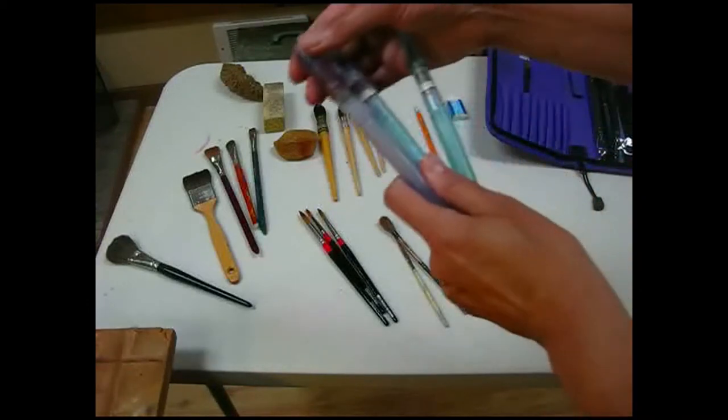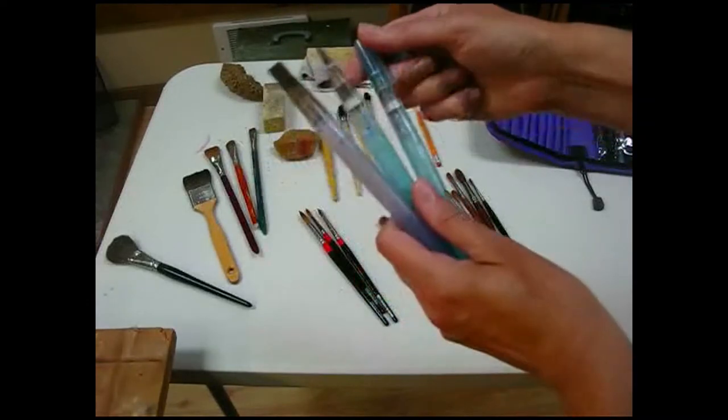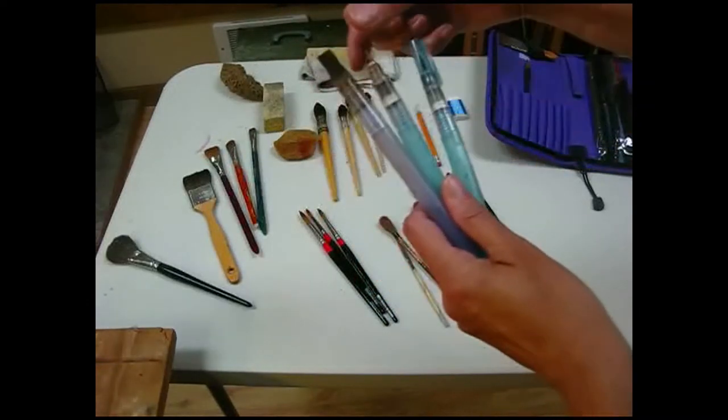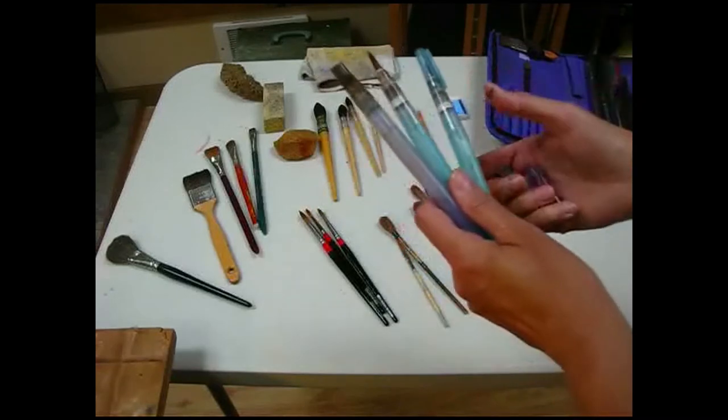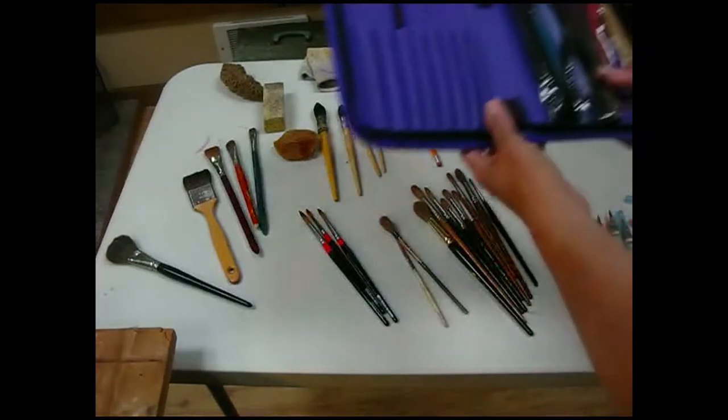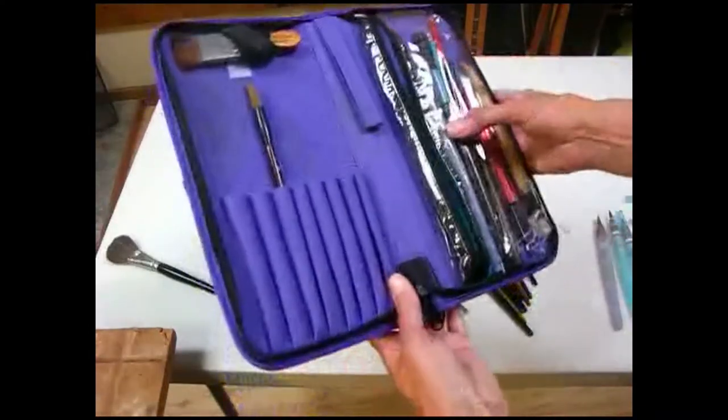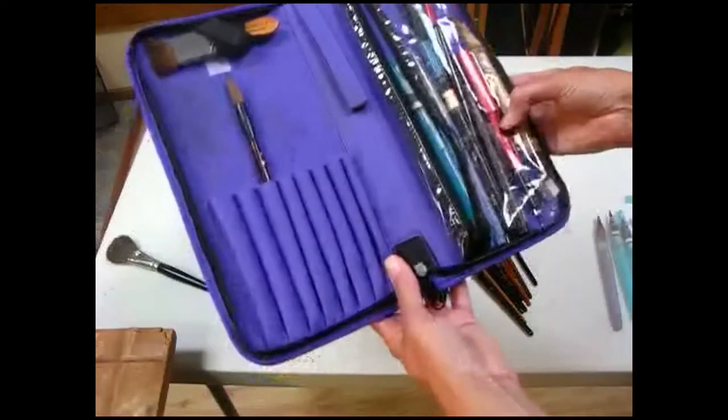And then these are water brushes, and they come in flats and rounds and various sizes. You can see these are nicely stained. And then here is my traveling kit that I use to carry all my supplies, my pens, my water brushes, etc.